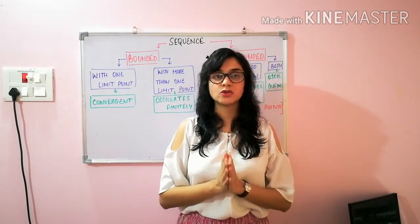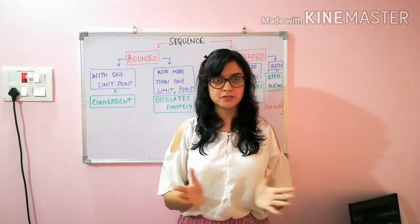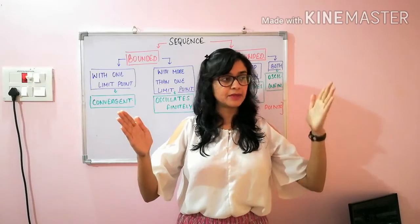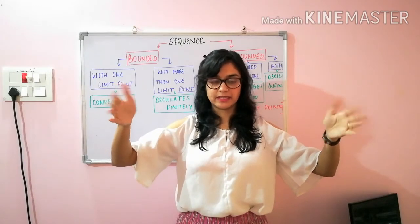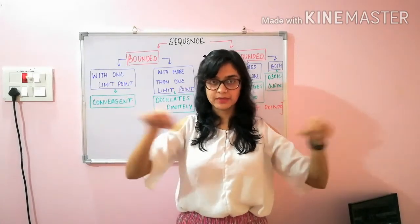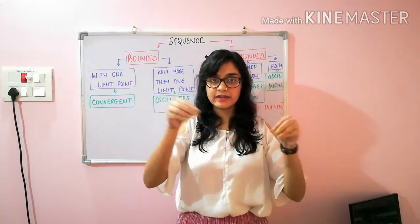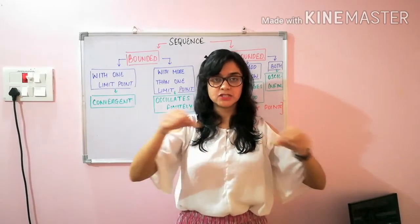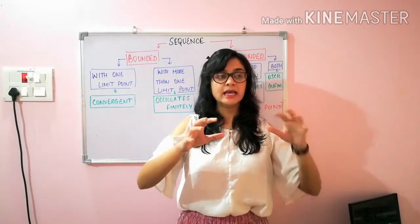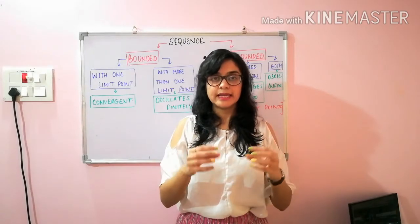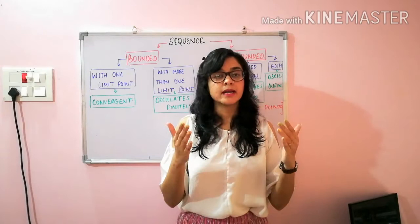In layman's terms: you are given a bounded sequence, meaning there are two real numbers on the real axis such that your sequence does not cross these limits — the sequence stays within these two boundaries. And there are more than one limit points, meaning there are different real numbers between your bounds such that your sequence is going somewhere and then coming back to that point, then going somewhere and coming back again — the sequence oscillates between these points.